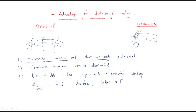Second point: dominant harmonics can be eliminated. This is a very important advantage of the distributed winding — dominant harmonics can be eliminated.